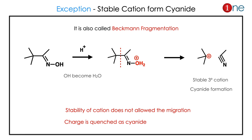There is one important exception. If a stable cation forms, it produces a cyanide without undergoing rearrangement. After H+ attack and OH2 departure, instead of rearrangement, the stable cation is removed from the system and the charge is quenched to form a cyanide. So a stable cation does not allow migration — the charge is quenched as cyanide. This is called Beckmann fragmentation.